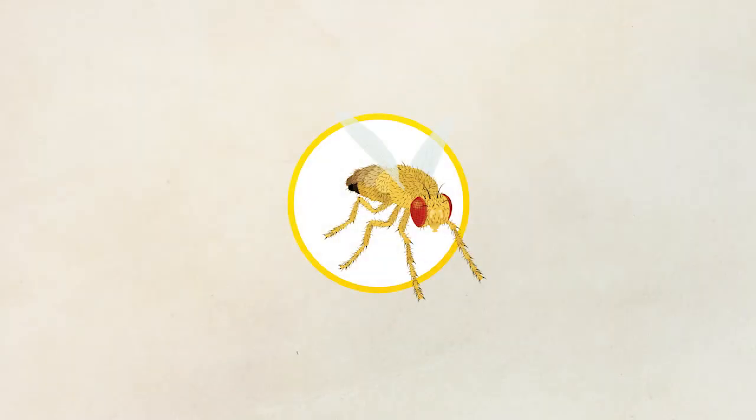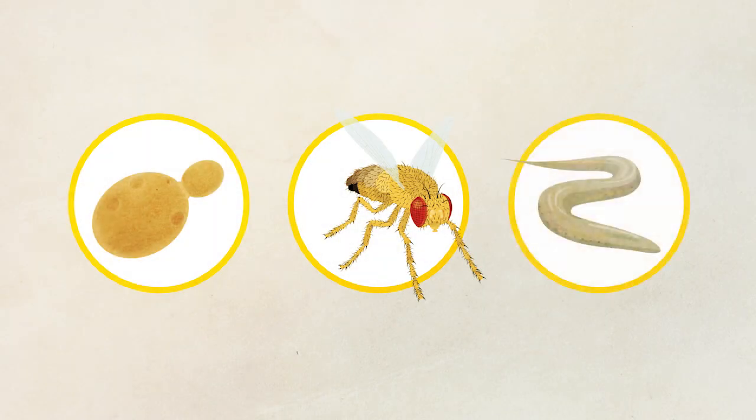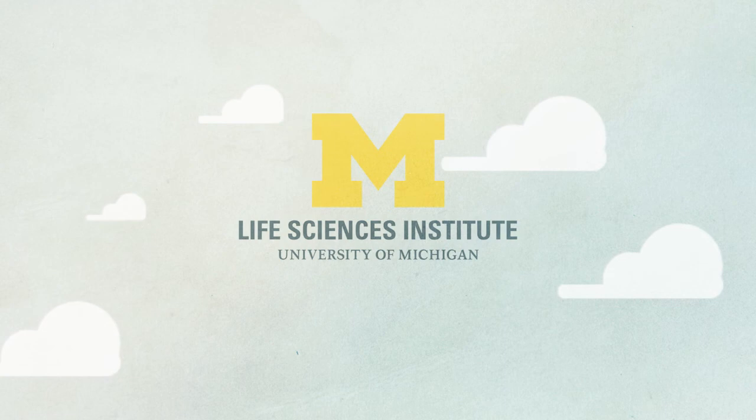This new receptor could be used to help develop new research tools or even better sunscreen. So scientists don't study flies or yeast or roundworms to learn about these organisms, but to better understand the basic biological processes that shape health and disease.